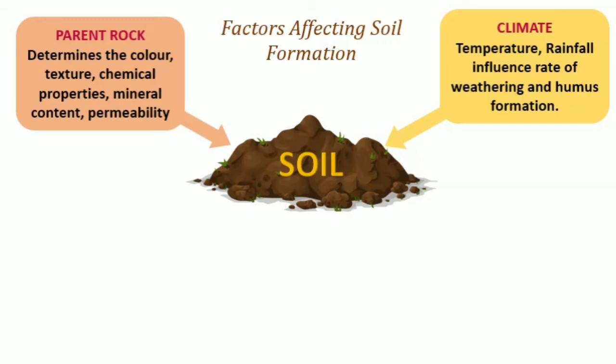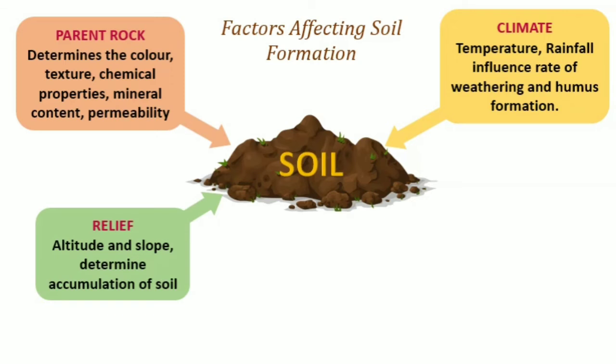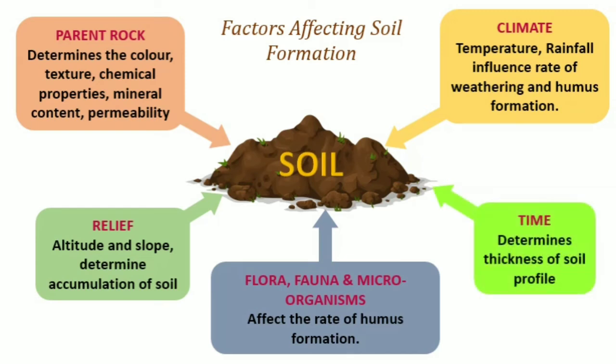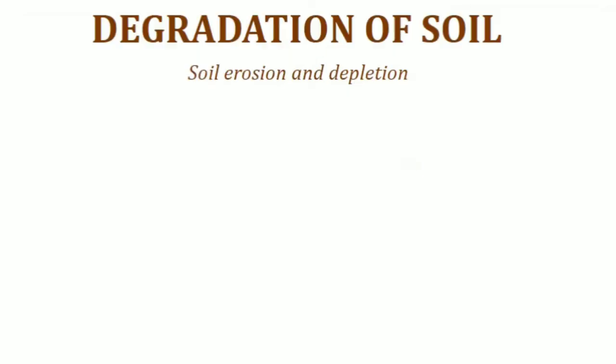Parent rock determines the color, texture, chemical properties, mineral content, and permeability. Climate — that is temperature and rainfall — influences the rate of weathering and humus formation. Relief features such as altitude and slope determine the accumulation of soil. Flora, fauna, and microorganisms affect the rate of humus formation, and time determines the thickness of the soil profile.